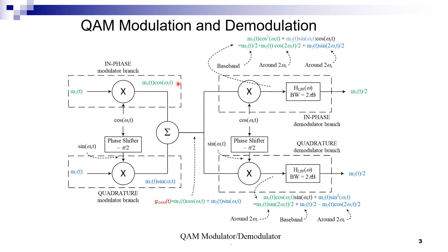The green branch is for the first message M1, and it gets modulated by the carrier cosine(ωct). The result is M1 times cosine. In the lower branch, we have M2 multiplied by a carrier phase-shifted by −π/2, which makes the carrier a sine, and after the multiplication we get M2 times sine(ωct). If we add them together, we get what we call the Quadrature Amplitude Modulated Signal. In general, the QAM signal is M1·cos(ωct) + M2·sin(ωct).